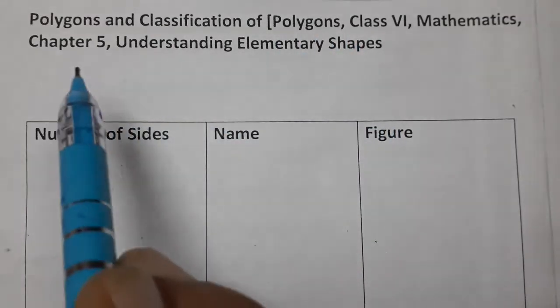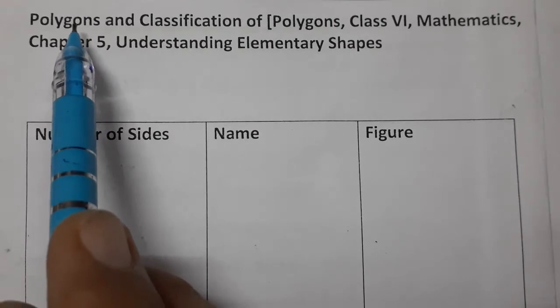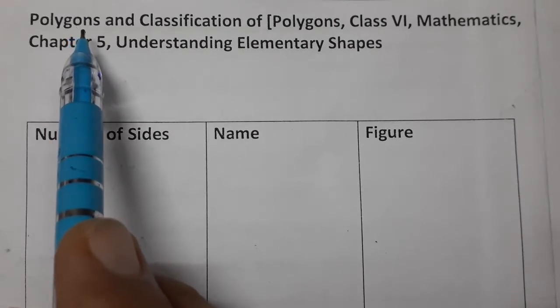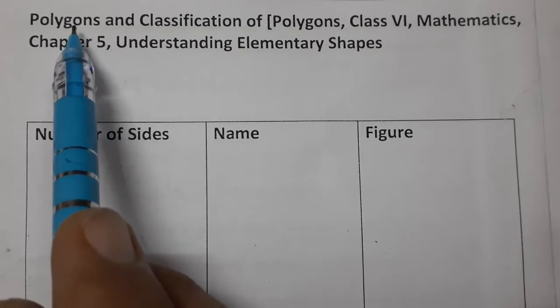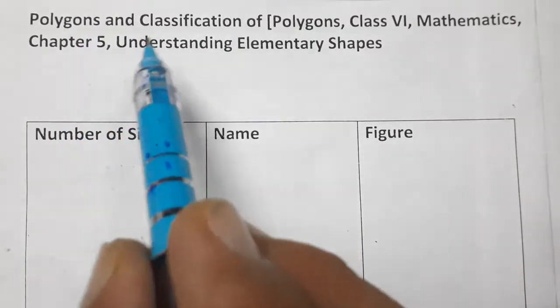You know about polygons - polygons are closed figures made up of line segments, and the least number of sides is 3, must be 3.